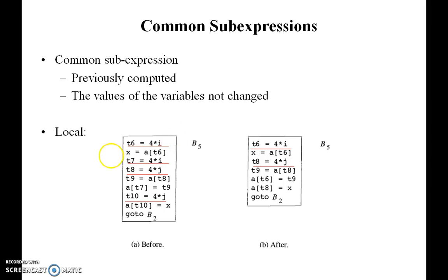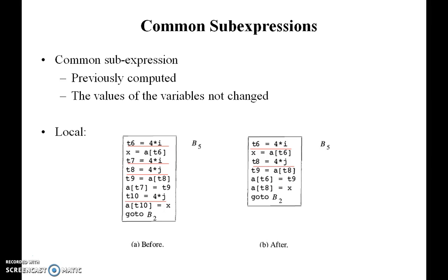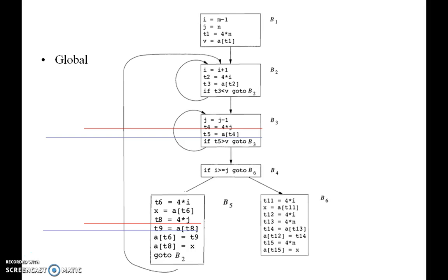After optimization, we look at block 5 in the next diagram. Here, we remove T7 and T10, keeping only one value. This kind of common sub-expressions will be eliminated, through which we optimize the code and improve the compiler efficiency.